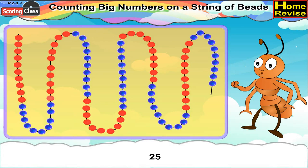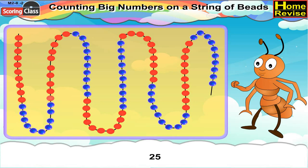Number 25. For number 25, first we will see the 10 red beads, followed by 10 blue beads. And now we will count 5 red beads and place the clip after 5 red beads. We have number 25.